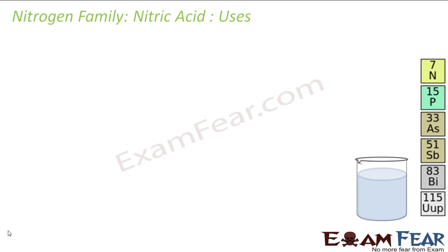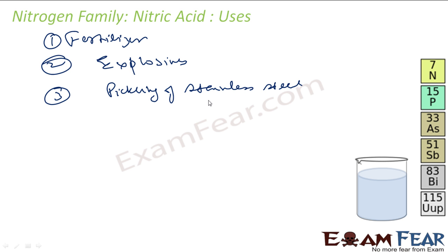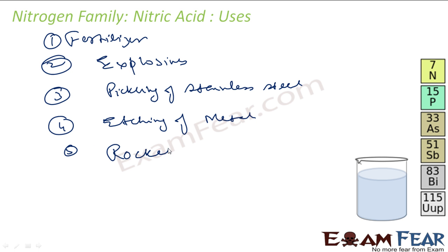The uses of nitric acid include: manufacturing fertilizers such as ammonium nitrate, manufacturing explosives, pickling of stainless steel, etching of metals, and as rocket fuel. These are the typical uses of nitric acid.